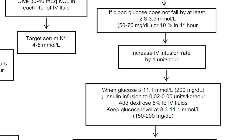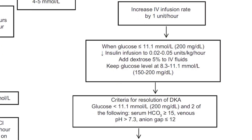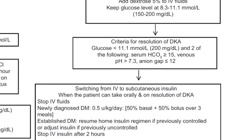The main target is to keep glucose between 150 to 200 mg/dL. Criteria for resolution of DKA: glucose should come below 200 mg/dL, and two of the following should occur — serum bicarbonate increases, pH increases, and anion gap falls. Once achieved, we can switch IV insulin to subcutaneous insulin, but only when the patient can take orally.